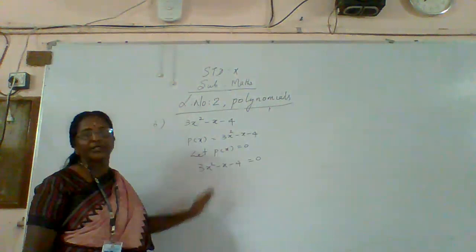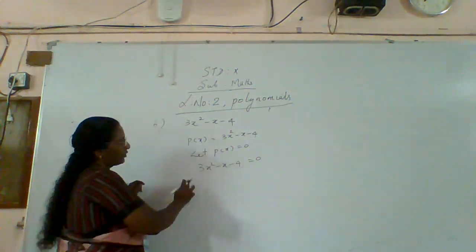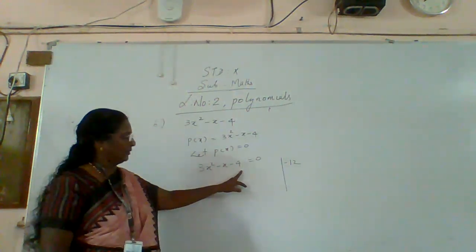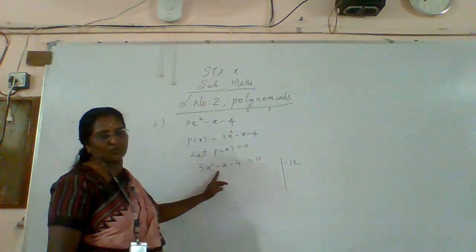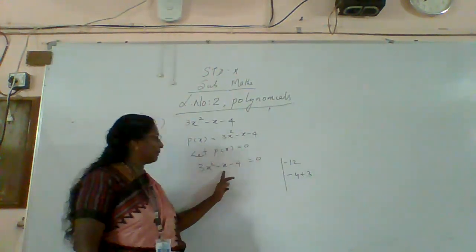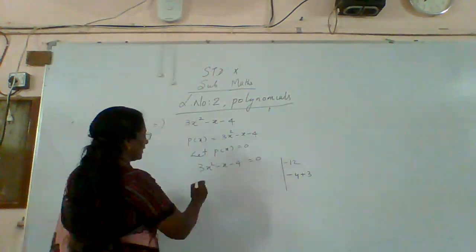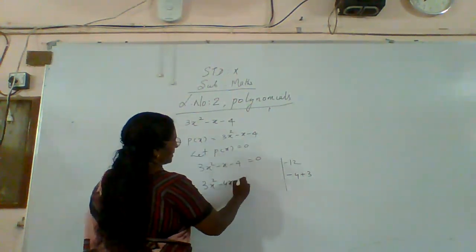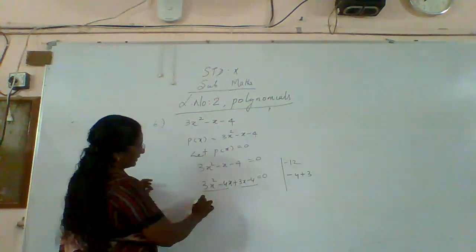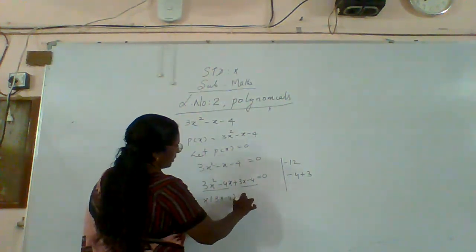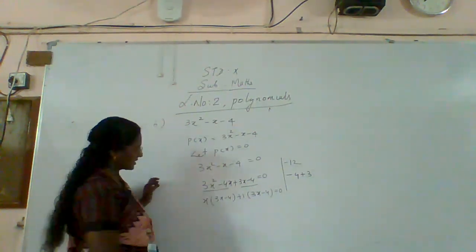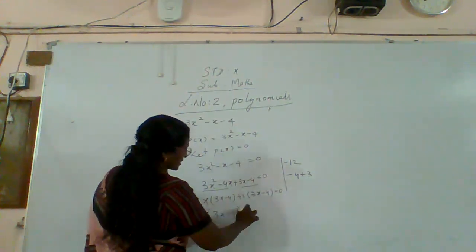Do along with me. Find out three into minus four, that is minus twelve. Find out two numbers where the product is minus twelve and the difference is minus one: minus four and plus three. Minus four plus three equals minus one, and minus four into three equals minus twelve. So three x square minus four x plus three x minus four equals zero. From the first two terms, x is common: x into three x minus four. From the last two terms, plus one into three x minus four. Therefore three x minus four into x plus one equal to zero.